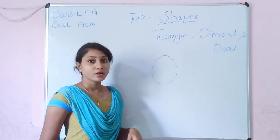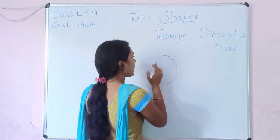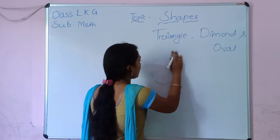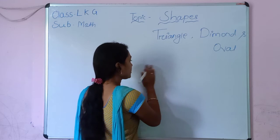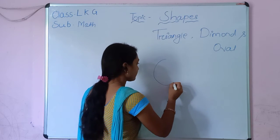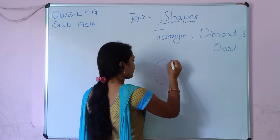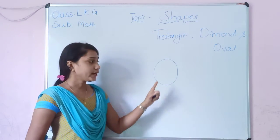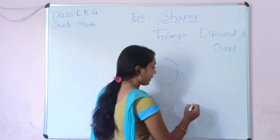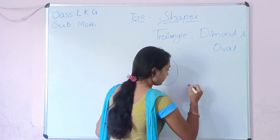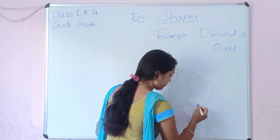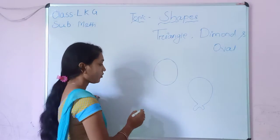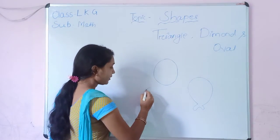It is round and long. Oval is like a balloon and like eggs.